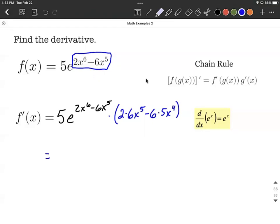We can clean this up just a little bit. I would say 5e^(2x^6 - 6x^5), and then next to that, we're going to multiply by 12x^5 - 30x^4.